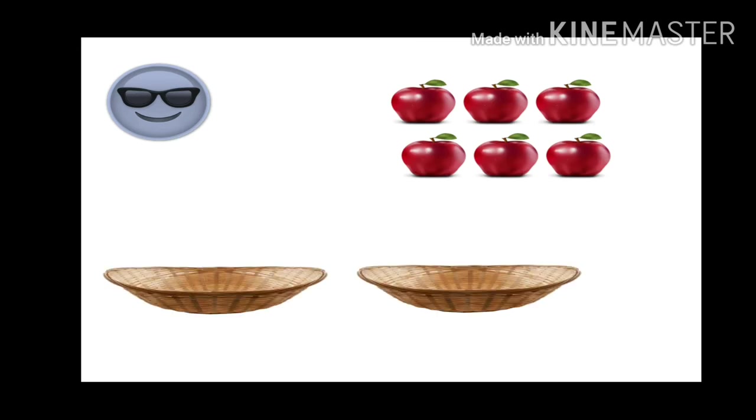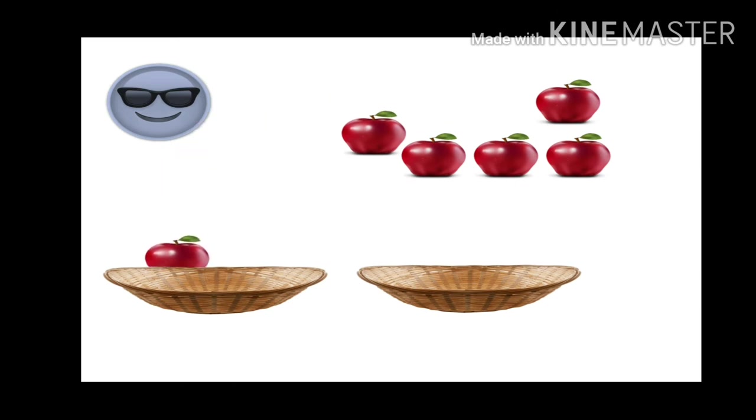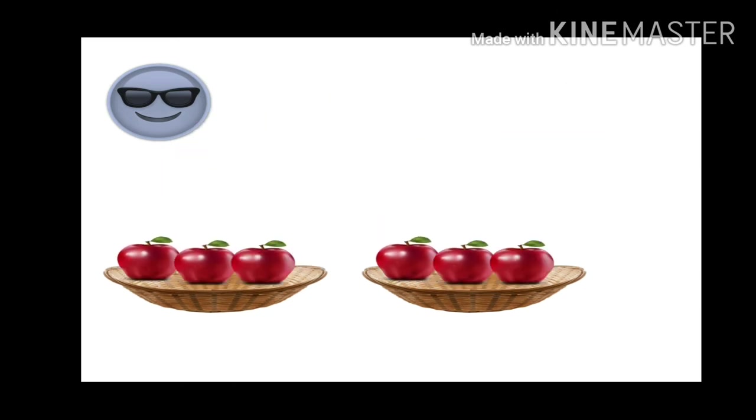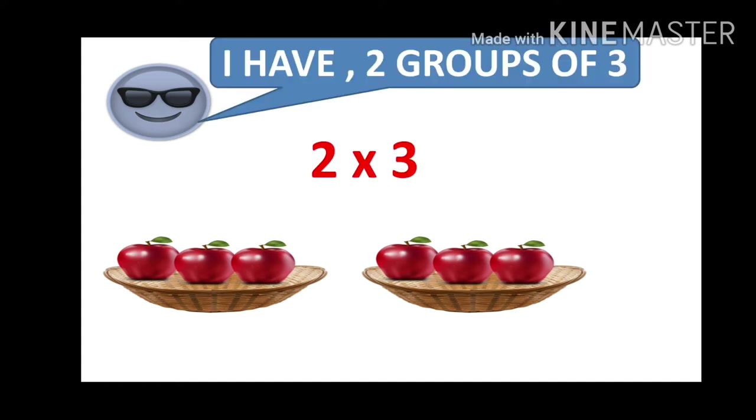Next, it's the turn of roll number 2. As per his roll number, he has got 2 baskets. So he starts filling up one by one, and he fills up the 2 baskets — 3 each. So in each basket, he has 3 apples. So 3 plus 3 is 6 apples. He has done it too — he has got 2 groups of 3.